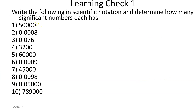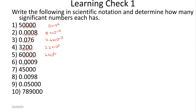Let's try some more. First example: zeros are all placeholders, move it one, two, three, four times — 5 times 10 to the fourth. Next: one significant number, eight; move it one, two, three, four to the right — 8 times 10 to the negative four. Next: two significant figures, 7.6; move it to the right two times — negative two. Next: three significant figures, 3.2; move to the left three times — 10 to the third. Next: one significant figure, zeros are placeholders; move one, two, three, four — 6 times 10 to the fourth. Next: move one, two, three, four to the right — 9 times 10 to the negative four.